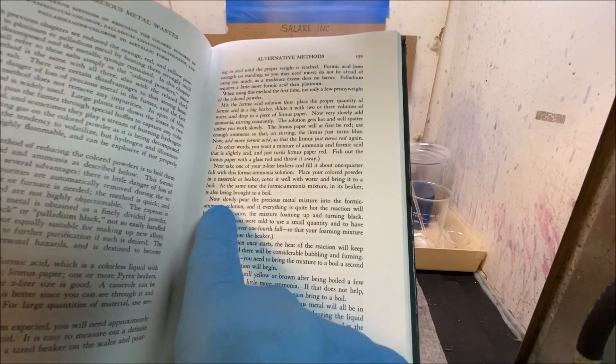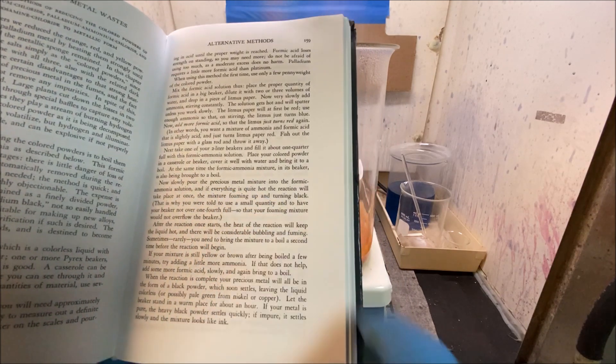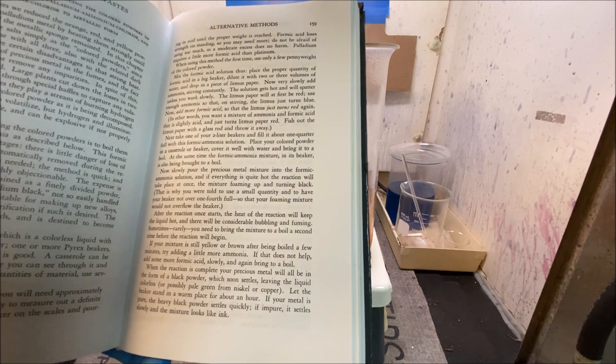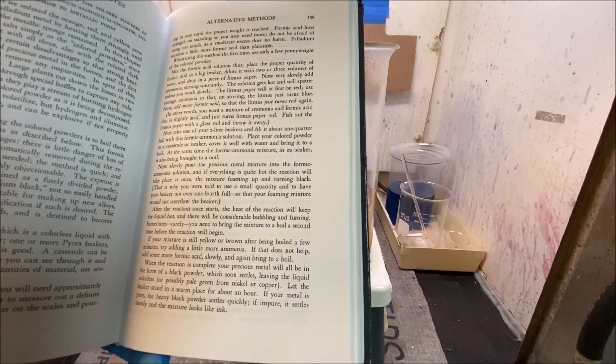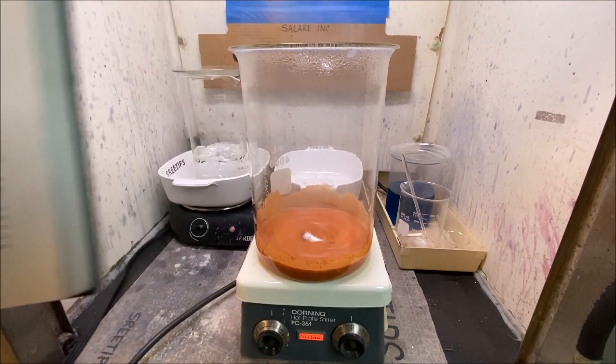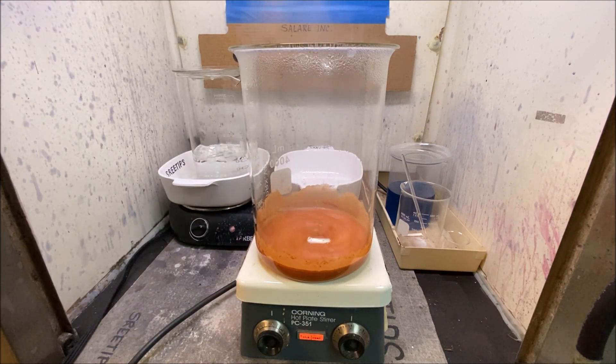If you look in the instructions, it says now slowly pour the precious metals mixture into the formic ammonia solution, and if everything is quite hot, the reaction will take place at once, the mixture foaming up and turning black.